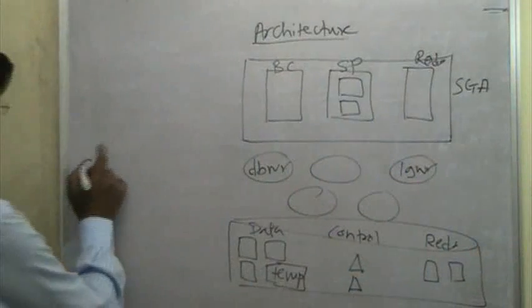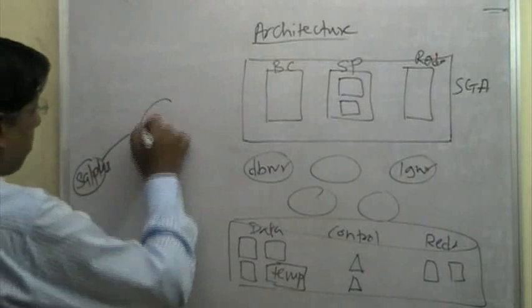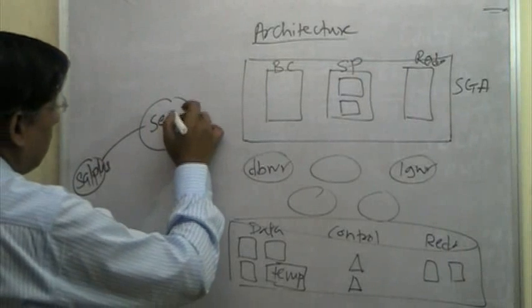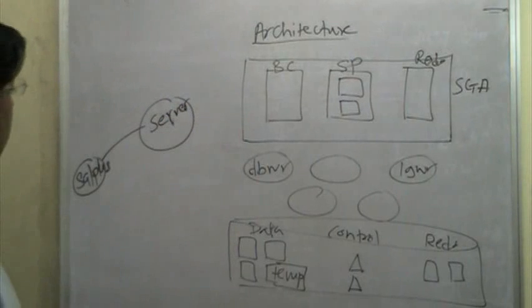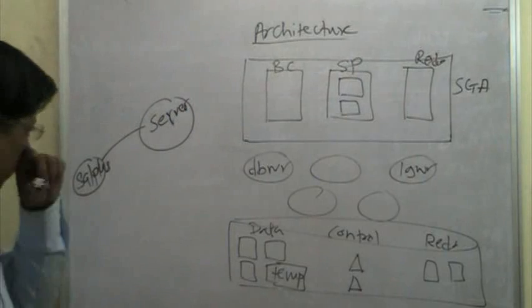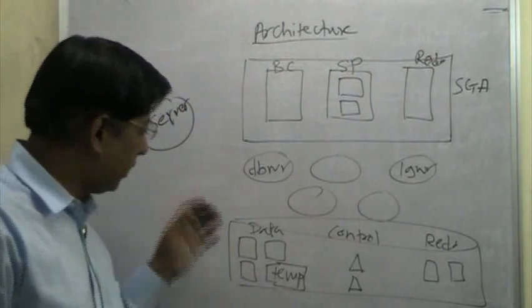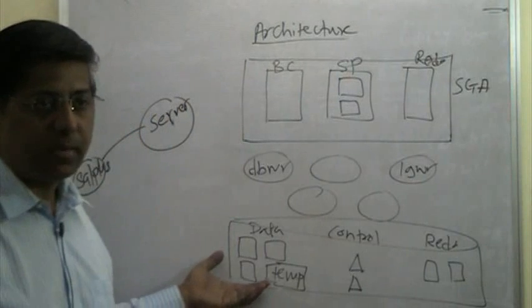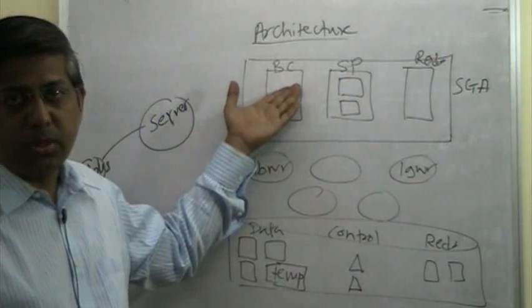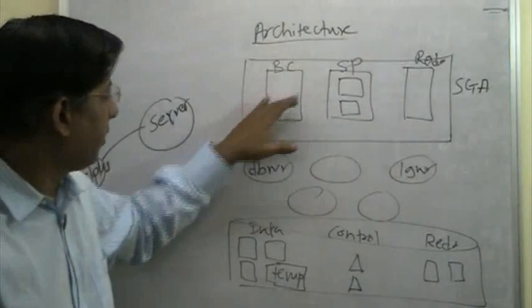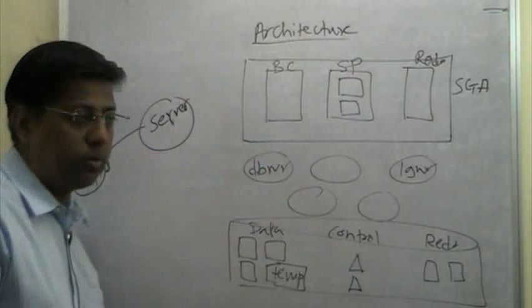So this is a client process, SQL Plus. And the client process gets connected to the server process. The server process is responsible for doing quite a few things. One of the important things is to bring data from disk into the buffer cache. And which process is responsible for putting data from buffer cache to the disk? It's the DBWR process. Authentication is also done by the server process.